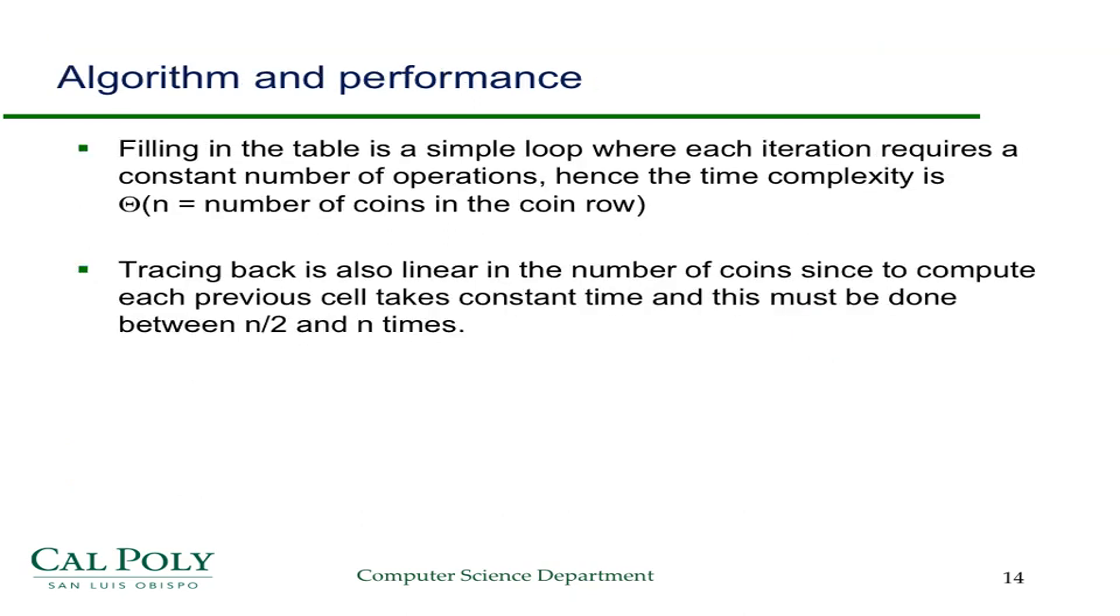So, filling in the table, simple loop, where each iteration requires a constant number of operations. Hence, the time complexity is basically linear. Tracing back is also linear since to compute each previous cell takes constant time. And this must be done between n over 2 and n times, depending on whether you're going back by one each step or two. So, it's going to be someplace between n over 2 and n times. So, it's also linear.